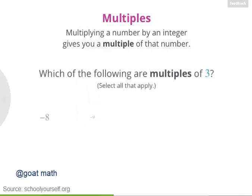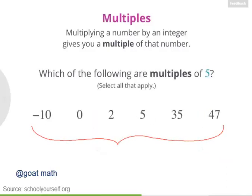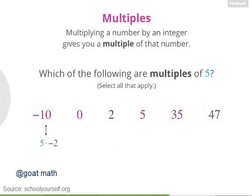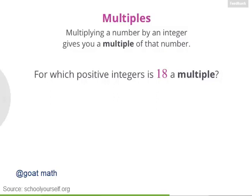Now, numbers also have negative multiples. So which of these numbers here would you say are multiples of 3? Which of these are equal to 3 times a negative integer? Excellent! Negative 9 is a multiple of 3 because it equals 3 times negative 3. And negative 15 is also a multiple because it equals 3 times negative 5. So try putting all this together. Which of these numbers here are multiples of 5? Exactly! Negative 10 is 5 times negative 2, 0 is 5 times 0, 5 is 5 times 1, and 35 is 5 times 7. So for your final challenge, can you find all the positive integers for which 18 is a multiple? There are 6 such numbers — try to find them all, and if you get stuck, feel free to ask for a hint.